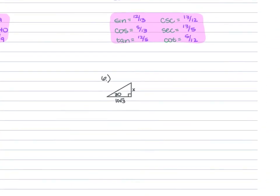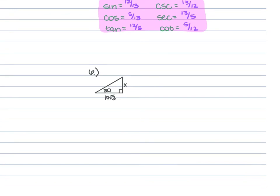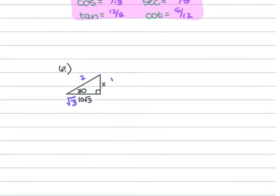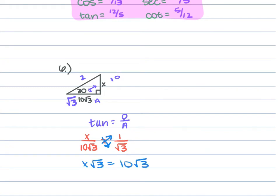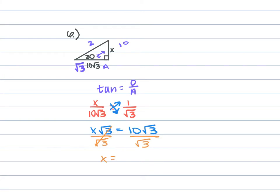For problem 6, a 30-60-90 triangle has side lengths of 1, 2, and square root of 3. We're given x and 10 square root 3. Our x is our opposite and 10√3 is our adjacent, so opposite over adjacent is tangent. This gives x over 10√3 equals 1 over √3. Cross-multiplying: x√3 = 10√3, so dividing each side by √3 gives x = 10.